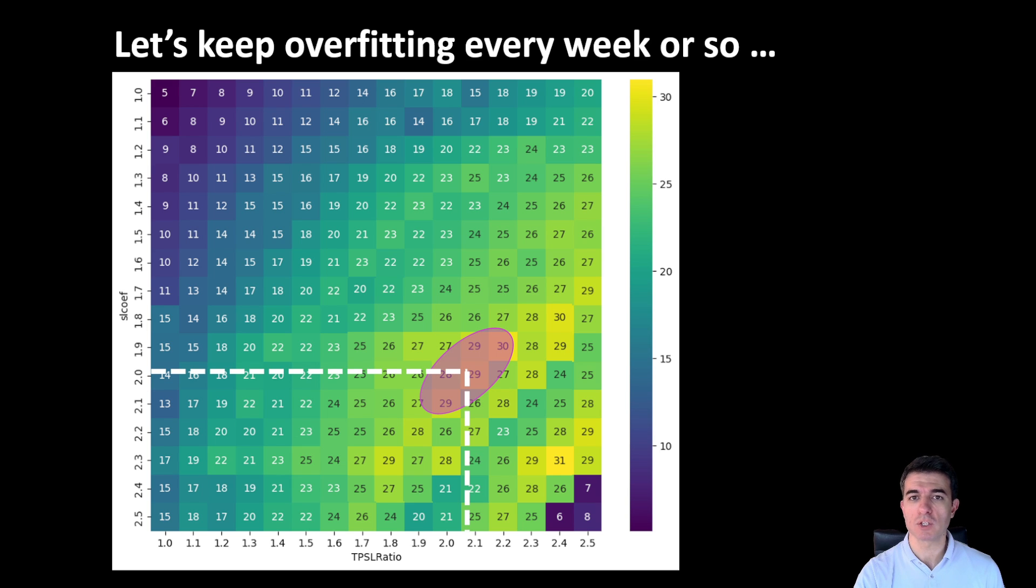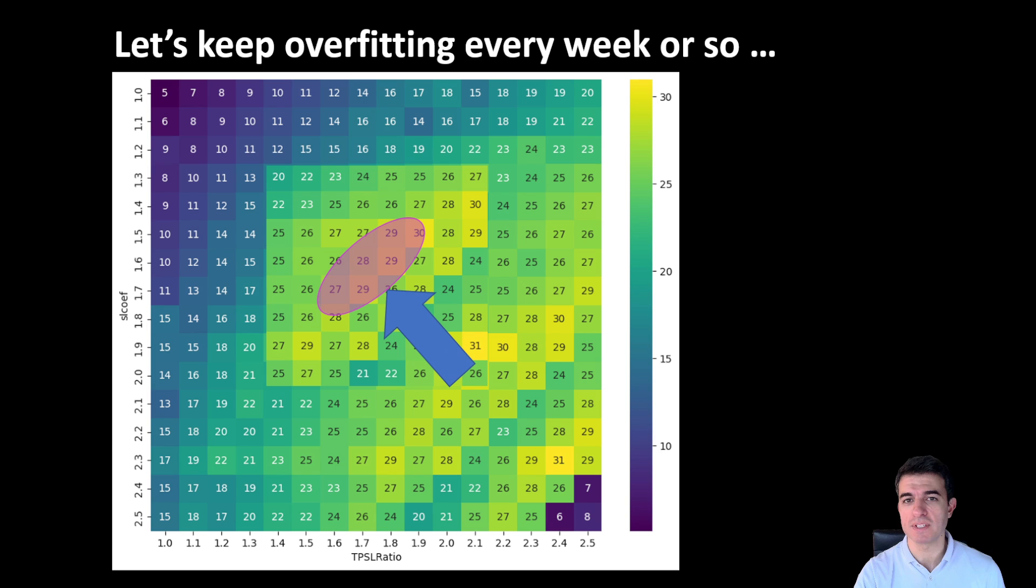After a while, market conditions will change. And so this cluster of maximum profit is expected to shift to a different area of take profit and stop loss distances. So this is why we can rerun our pipeline of parameters, or fitting the parameters and identify a new set of take profit and stop loss distances to trade with, providing a safe area of positive returns.